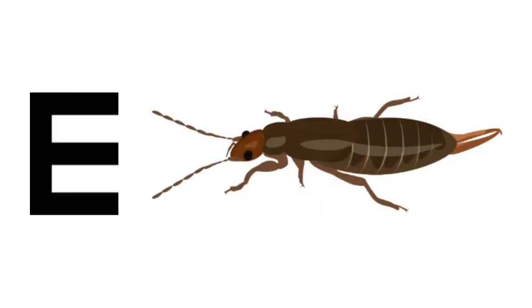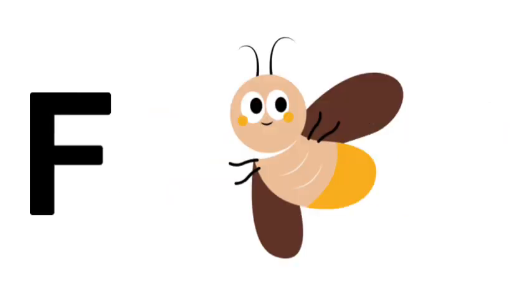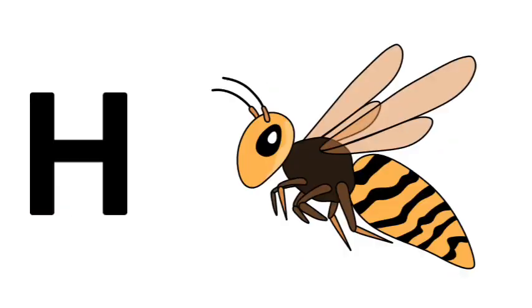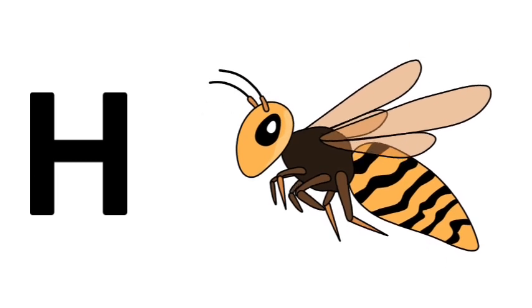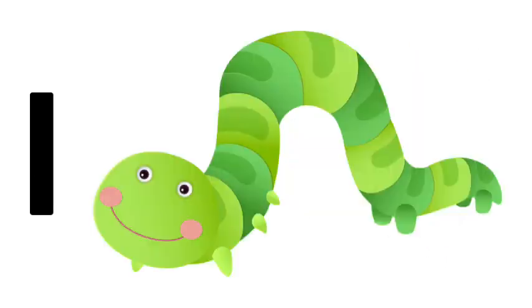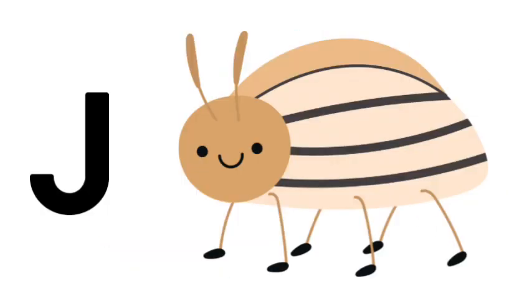E is for Earwig, F is for Firefly, G is for Grasshopper, H is for Hornet, I is for Inchworm, J is for Junebug.